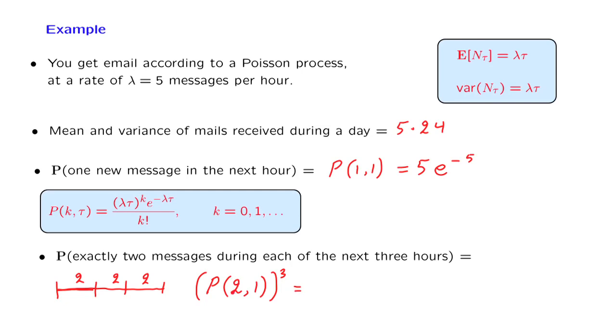Now, this expression is equal to the following. Lambda times tau is 5. K is equal to 2, so we get 5 squared. Then we have an e to the minus 5 term. And K is equal to 2, so we're dividing by 2. And we take the third power of this.